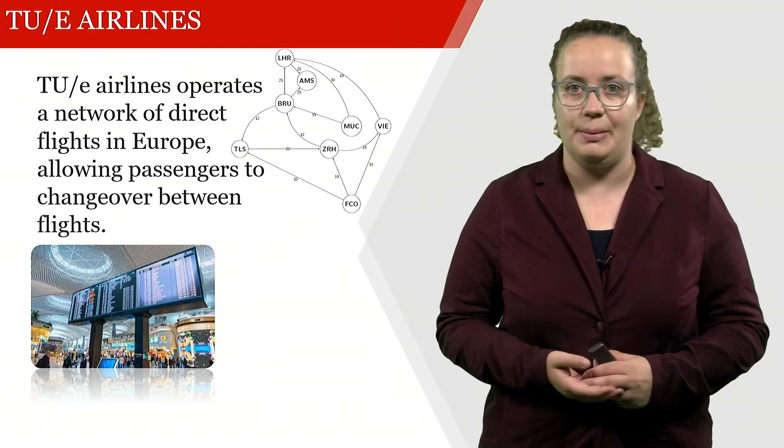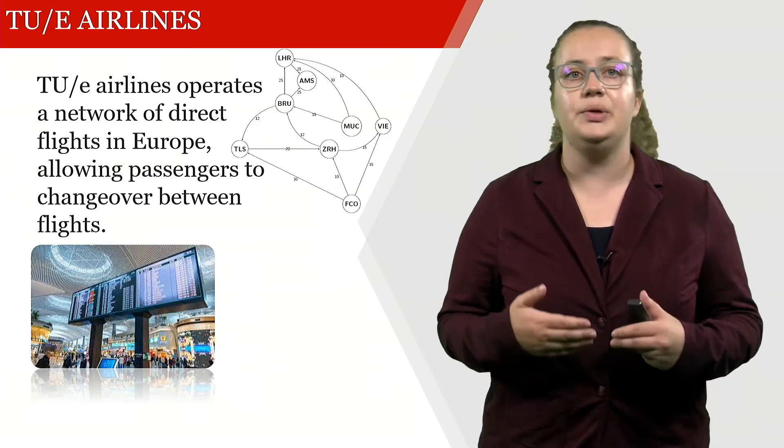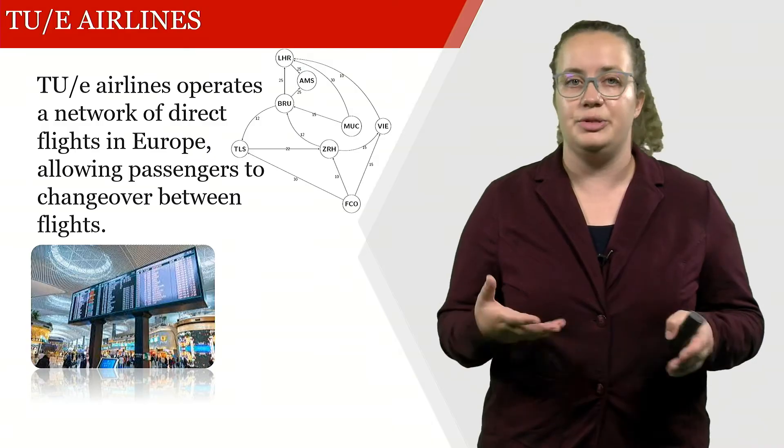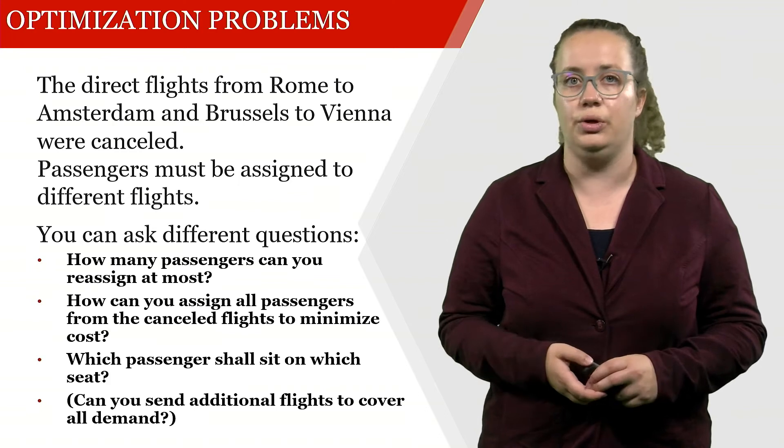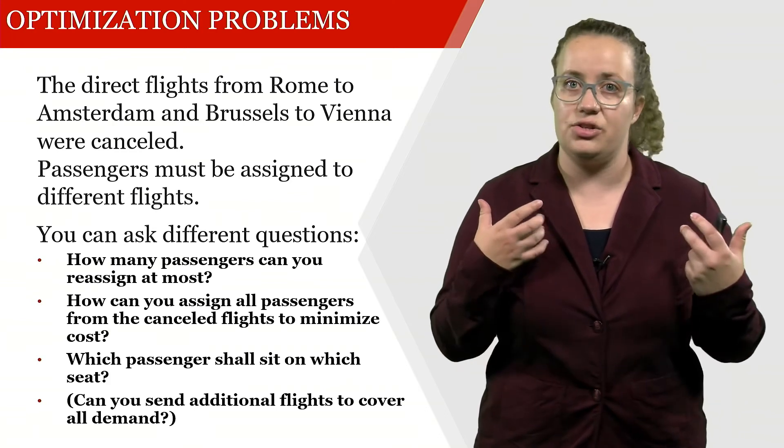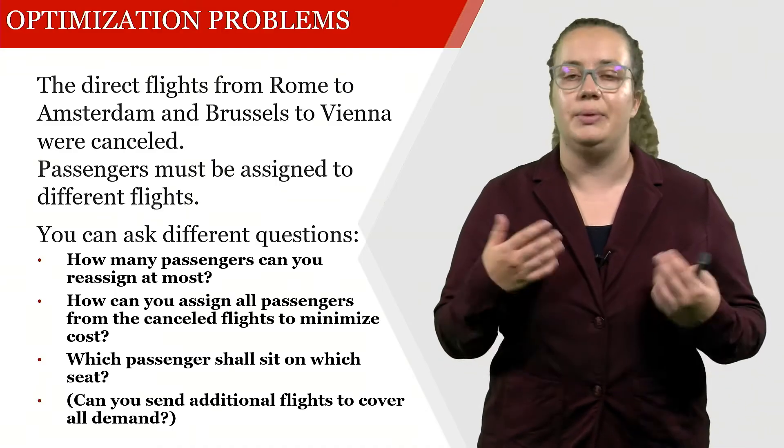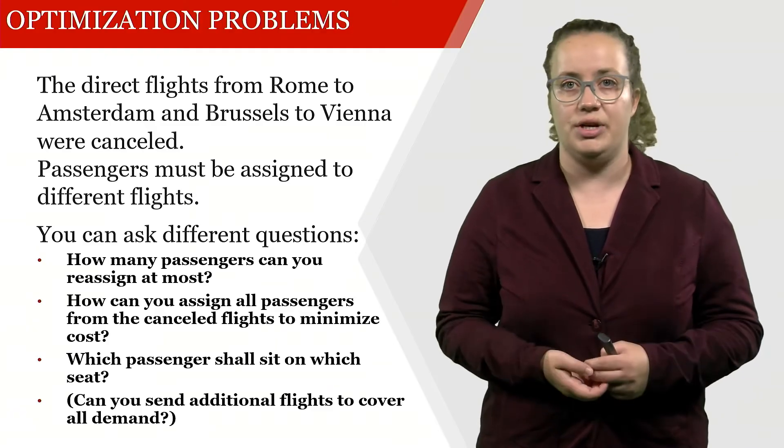Similar to the previous web lecture, we're also going to use the example of TOE Airlines. TOE Airlines operates a network of direct flights in Europe and allows passengers to change over between these flights. Now they have a problem because two of their flights have been cancelled, which means that some passengers that wanted to go from Rome to Amsterdam are now stranded in Rome, while some other passengers that wanted to go from Brussels to Vienna are now stranded in Brussels.